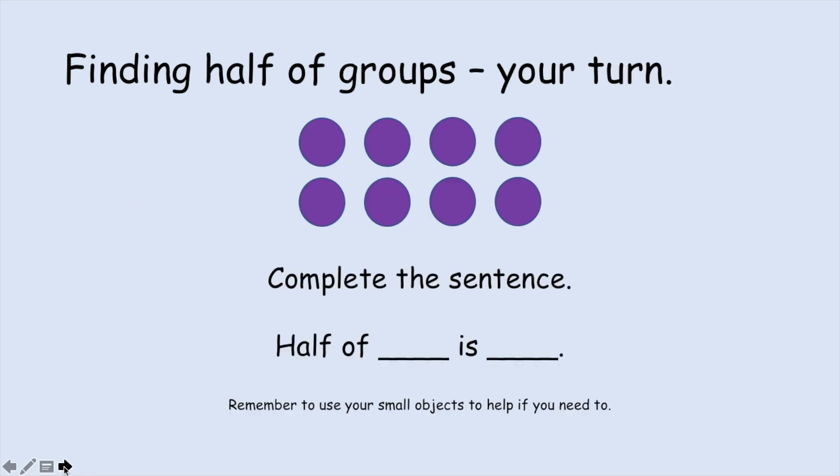So now it is your turn. Here I have one, two, three, four, five, six, seven, eight counters. So you need to do exactly what I just did with the sweets and find out what half of eight is. Remember, you can use your small objects to help you if you need to. Remember, half means that we are making two equal groups.